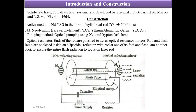In this laser system, the active medium is made up of Nd-doped YAG, which is in the form of a cylindrical rod. Here, some of the yttrium ions are replaced by neodymium ions. ND stands for neodymium, which is a rare earth element, and YAG stands for yttrium aluminium garnet. The same optical pumping scheme used in the Ruby laser is used here, with a xenon or krypton flash lamp as the pumping source.